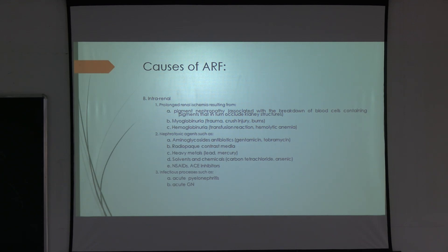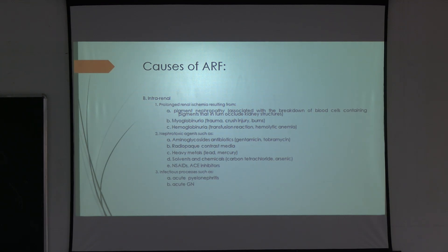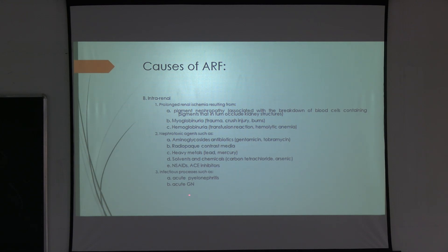Intra-renal causes involve a problem within the kidney itself. Prolonged renal ischemia may cause pigmented nephropathy, myoglobinuria, and hemoglobinuria. Nephrotoxic agents include many medications and radio-opaque dyes used in contrast CT or contrast-enhanced radiological investigations, all of which are excreted via the kidney. Heavy metals, solvents, chemicals, NSAIDs, and ACE inhibitors are also nephrotoxic. We always have to check the patient's renal profile. Infections such as acute pyelonephritis and acute glomerulonephritis are also intra-renal causes.